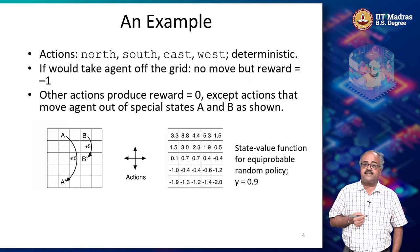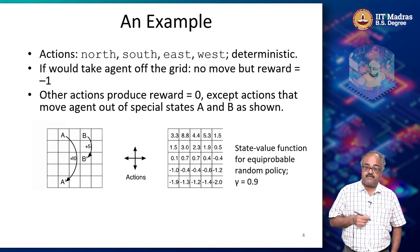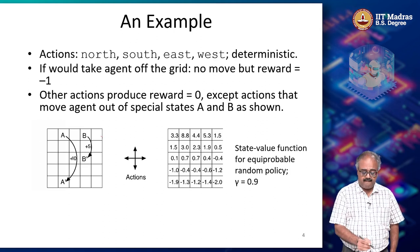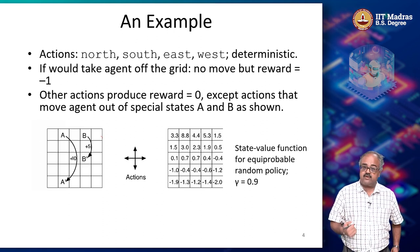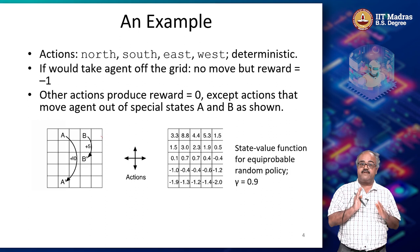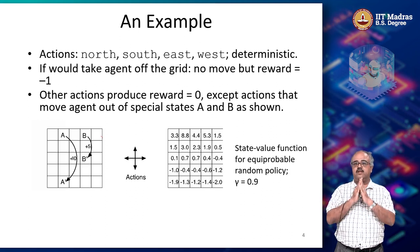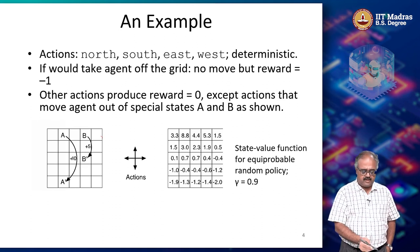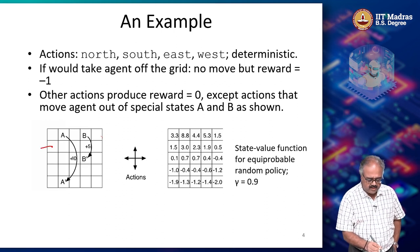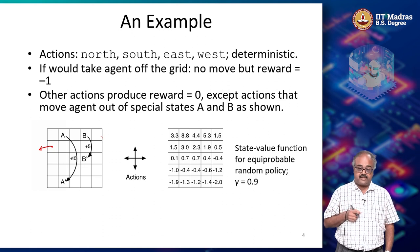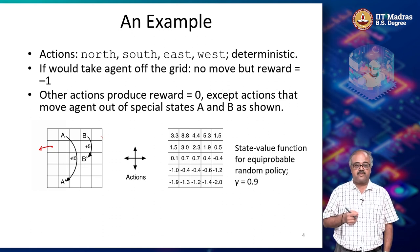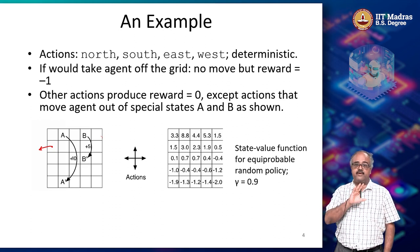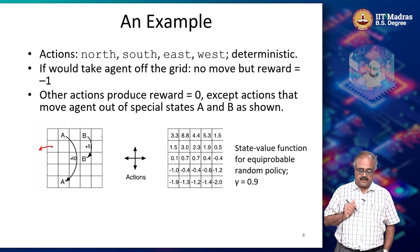Let us look at another example. Here is a 5 by 5 grid world with 25 states. The agent has 4 actions: north, south, east, west, and these actions are deterministic — if I say go north, it will always go north. If the action would take the agent off the grid — for example if you are at the edge and try to go further — nothing happens: you stay in the same location but get a reward of minus 1. Any other move gives a reward of 0, except in two special states.